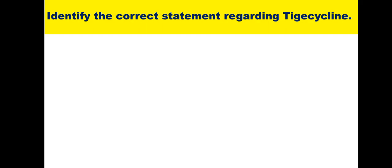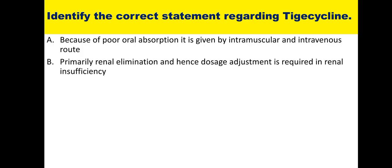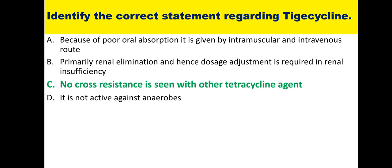Twelfth: identify the correct statement regarding tigecycline. Tigecycline is a broad spectrum, newer tetracycline group drug. It has poor oral absorption and is given by slow intravenous infusion, not intramuscular. It is eliminated in the bile, not by renal elimination. No cross resistance is seen with other tetracycline agents — this is the biggest advantage, as most organisms have developed resistance to older tetracyclines. It is also active against anaerobes. So the correct statement is 'no cross resistance is seen with other tetracycline agents.'